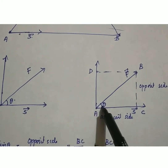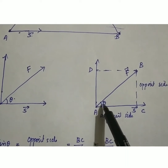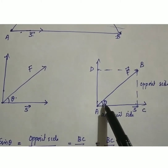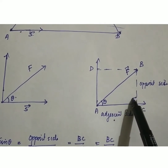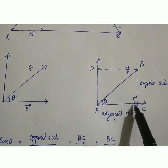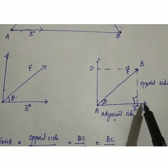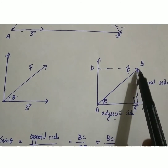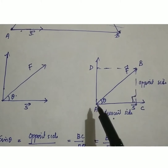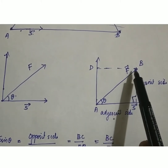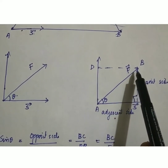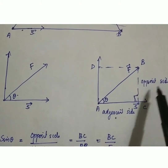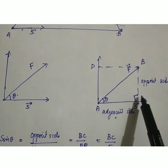Based on this angle, AZ is the adjacent side — because it is near to this angle. BZ is the opposite side — opposite to this angle. This angle is 90 degrees because BZ is perpendicular to AZ. So this triangle is a right angle triangle. AB represents the hypotenuse, AZ is the adjacent side, and BZ is the opposite side, based on this angle.